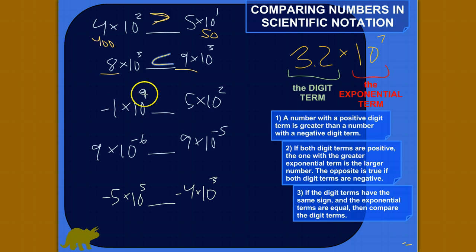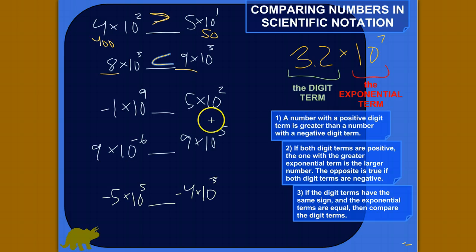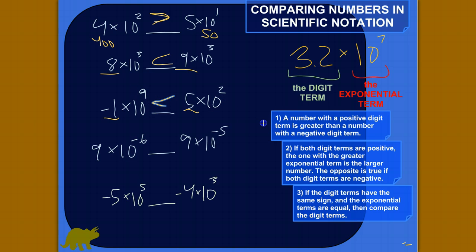Let's look at negative 1 times 10 to the ninth versus 5 times 10 to the second. Rule one: a number with a positive digit term is greater than a number with a negative digit term. Five is positive and negative one is negative, so we know that 5 times 10 to the second is greater than negative 1 times 10 to the ninth. Rule one knocks it out of the park right there without much thinking.